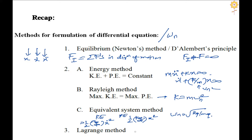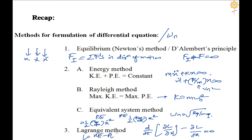The Lagrangian method is the most powerful of all methods available. It applies to conservative or non-conservative systems, free or forced vibration, and single or multi-degree-of-freedom systems. For our case, we use the formula: d/dt of the partial derivative of the Lagrangian with respect to velocity, minus the partial derivative with respect to displacement, equals zero, where the Lagrangian is given by the difference between kinetic and potential energy.